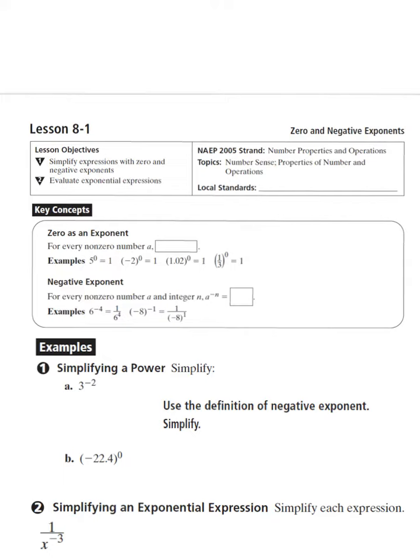Our two rules are: a to the 0 power is going to always equal 1, and a to the negative n is going to equal 1 over a to the n.